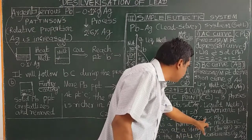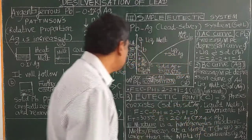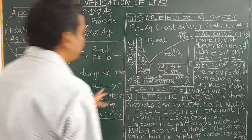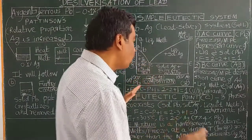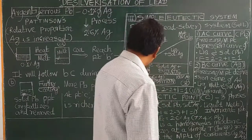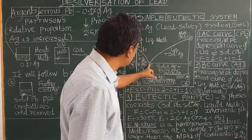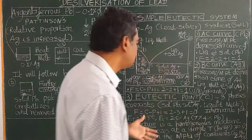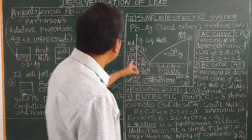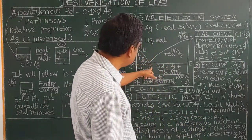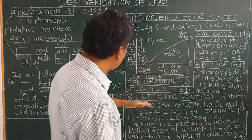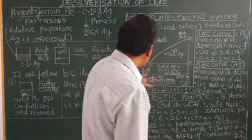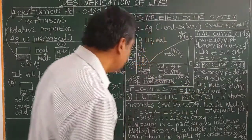The eutectic composition is 2.6% silver and 97.4% lead remaining. The eutectic mixture is a homogeneous mixture, and the eutectic melting point is the lowest melting point among pure lead and pure silver components.